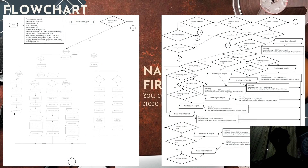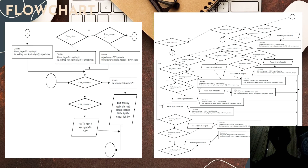This is our flowchart. We use terminal, oblong, rectangle, parallelogram, diamond, circle, and arrows to show the flow of the coding. We use circle as a connector to connect the flowchart across different pages.